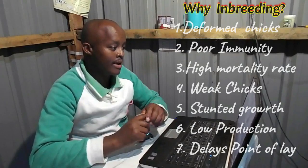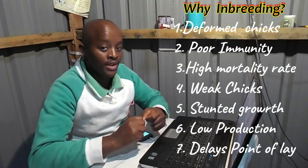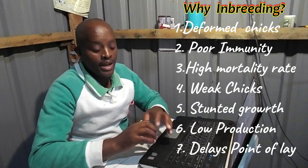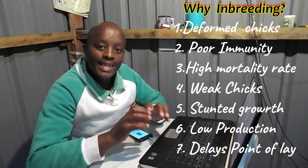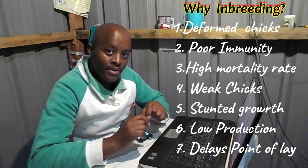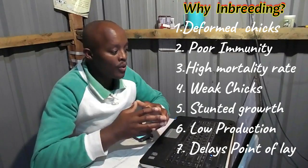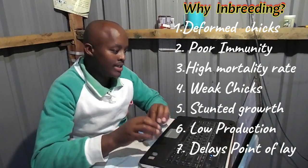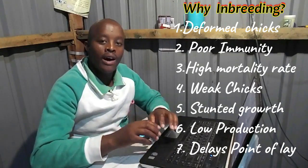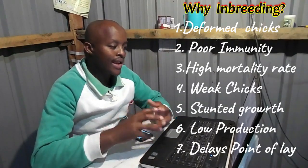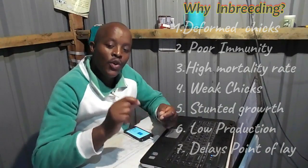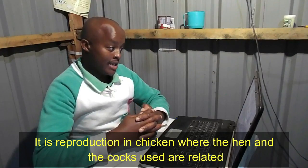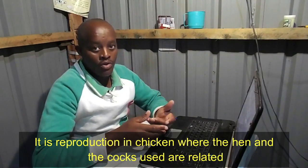Why inbreeding? Number one: it results in the production of deformed chicks. Number two: chicks produced have low immunity. Number three: mortality rate in these chicks is very high. Number four: they hatch very weak chicks. Number five: these chicks have substandard growth. Number six: production is normally lower. Number seven: in hens, the point of lay is normally delayed.